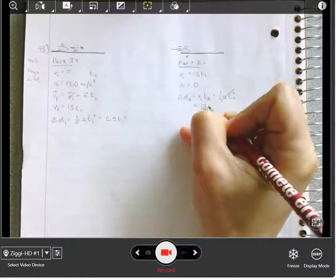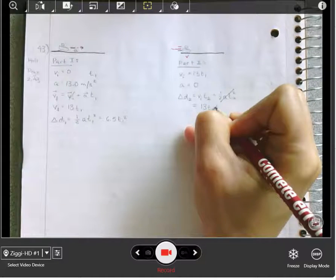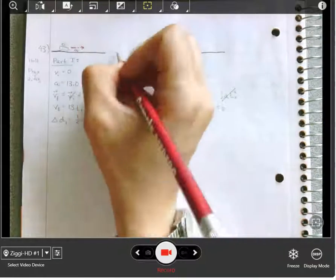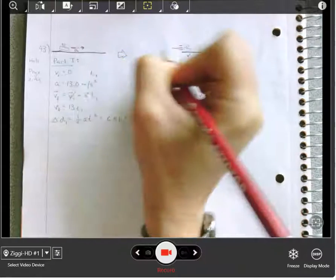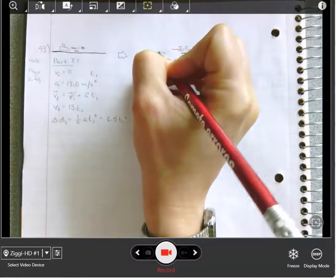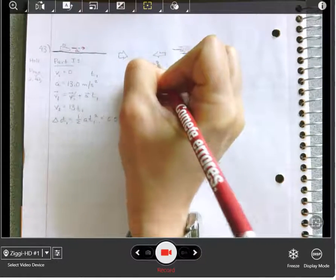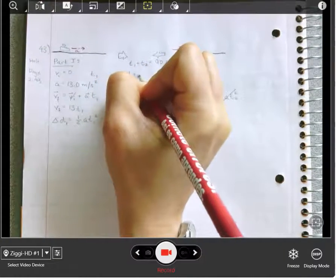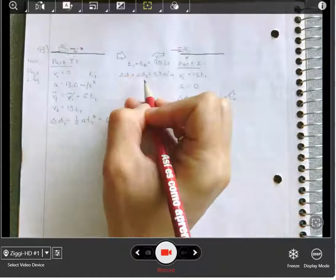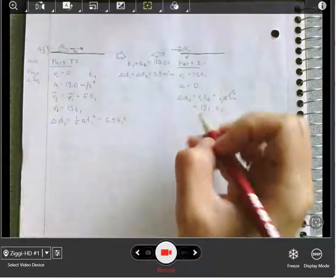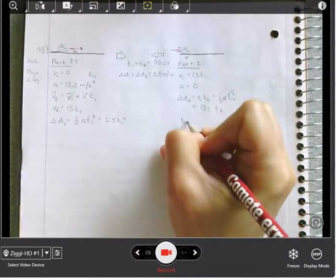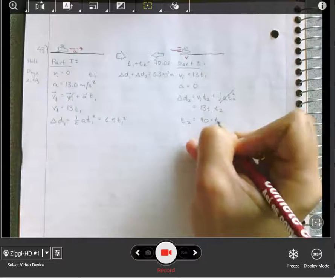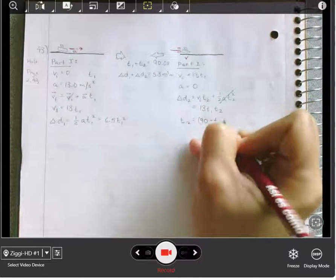Now, let's substitute in and see how far we've gone. This is where the physics ends and the algebra begins. We've got two pieces of information that are given about our totals. We have the total time is 90 seconds. And we have the total change in displacement is 5.3 kilometers. This means we can get rid of t2 entirely. T2 is simply whatever was left of the 90 seconds that t1 didn't take.